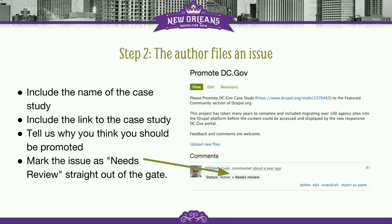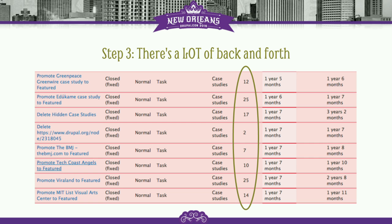The next step is that you file an issue in the issue queue — it's in the content issue queue, content type case studies. There's a link at the end of this session. When you create that issue, you need to include the name of your case study, include a link to the case study, tell us why you think it's worthy of promotion, and if you mark the issue as 'needs review' straight out of the gate, we'll get to it quicker — because 'needs review' is a flag for me and Dave Hochhausen, who is the other person really active in the case studies queue. I cannot tell you how many emails I get that are like 'please promote case study' without including the name of the case study, so please make sure that you actually follow the directions when you file the issue.